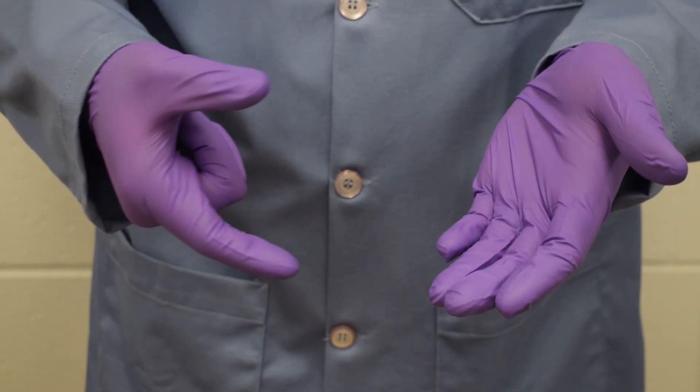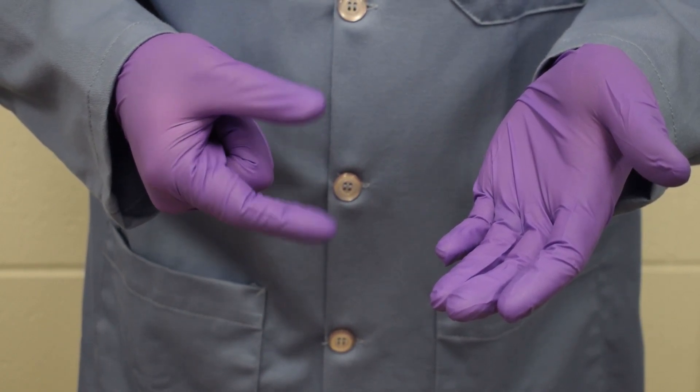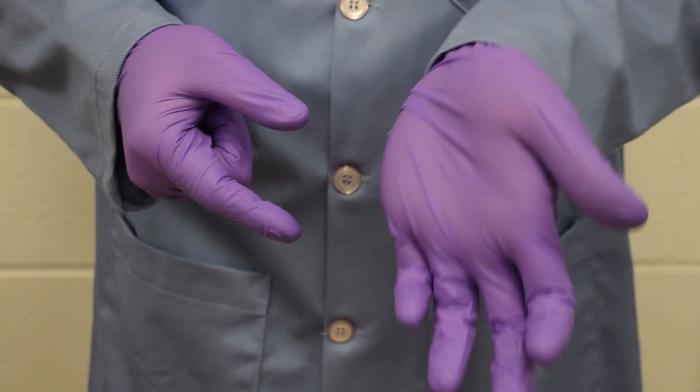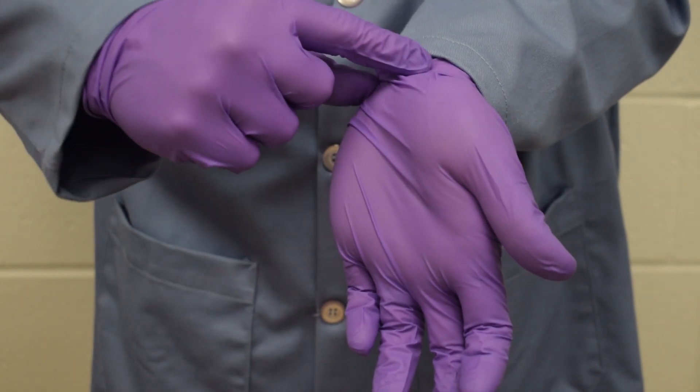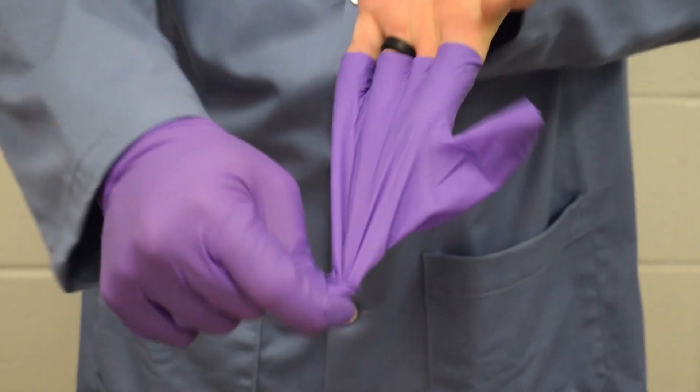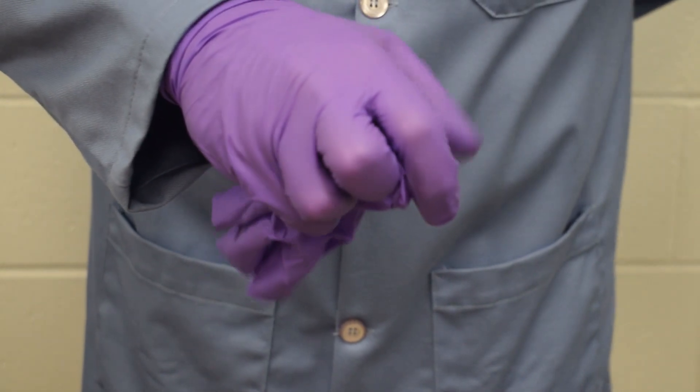Use the thumb and index finger of one hand to pinch the outside cuff of the glove on the opposite hand. Using this grip, pull the cuff downward and turn the glove inside out as you remove it.